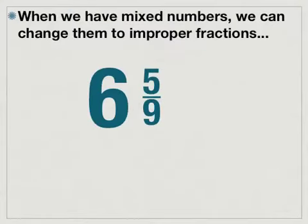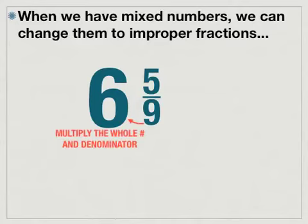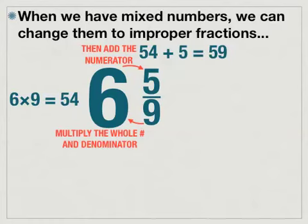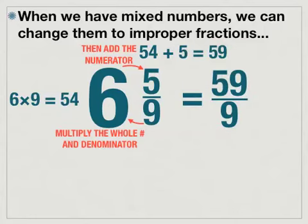When we have a mixed number, we can change them to improper fractions. If you remember how to do this, we're looking at the fraction six and five-ninths. To change a mixed number to an improper fraction, we multiply the whole number times the denominator. So in this case, it would be six times nine, which equals fifty-four. And then you're going to add the numerator. So six times nine gave us fifty-four, and we need to add fifty-four plus five, which gives us fifty-nine. To write this as an improper fraction, you put fifty-nine over the original denominator — it does not change — so it's fifty-nine over nine.